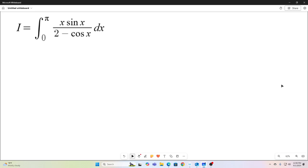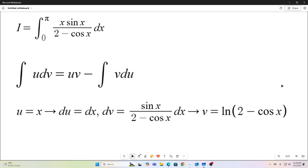First step, we're just going to use integration by parts on this. This is the formula: integral u dv equals uv minus integral v du. You guys all knew that. We'll make the following substitution. We'll let u equal x, which implies that du is going to be dx. And we're going to let dv equal the rest of it, which is just sin x over 2 minus cos x dx. Integrating that, we would get v is equal to the natural log of 2 minus cos x.